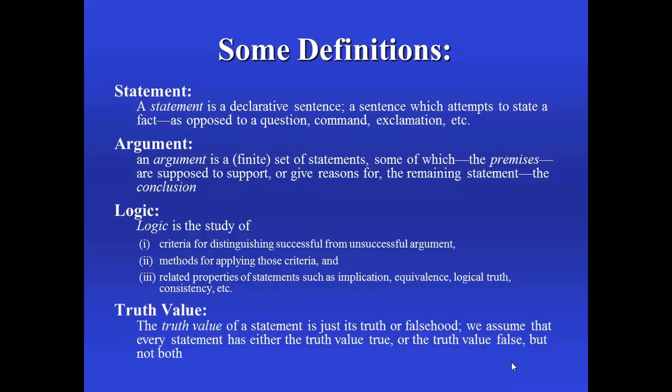Here's a definition you might not have seen before: truth value. When we say truth value here, we mean the truth or falsehood of a statement. We might not know whether it's true or false, but we're going to assume that every statement has either the truth value true or the truth value false, and not both. In our intermediate logic course, we examine logics that deviate from this simple assumption — logics with multiple values like true, false, and indeterminate, or true as the value 1, false as 0, and numbers ranging between 0 and 1, or logics that examine the ways in which sentences are true: necessarily true, possibly true, necessarily false or impossible. This course is a foundation for those more advanced topics, and so we won't be exploring them here. We'll stick to the basic two-valued system with truth values true, false, and not both.